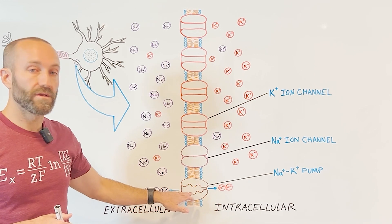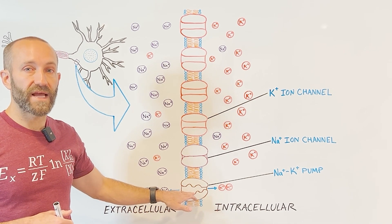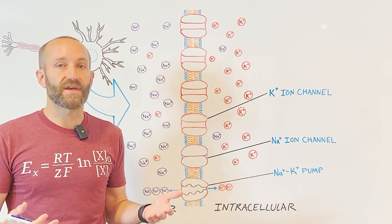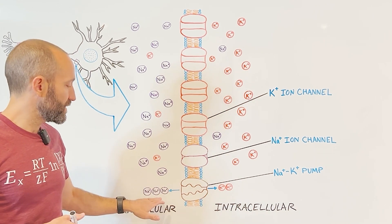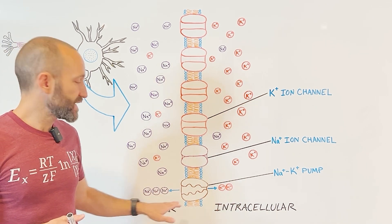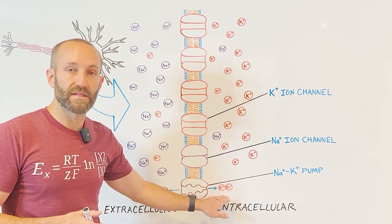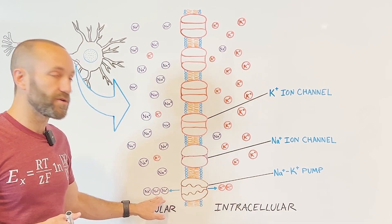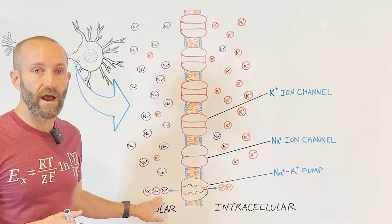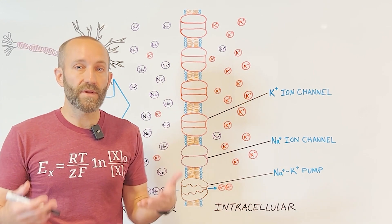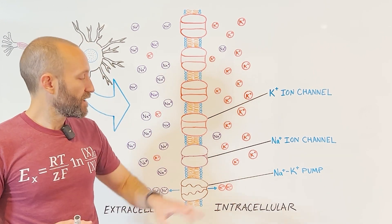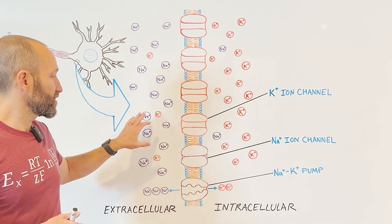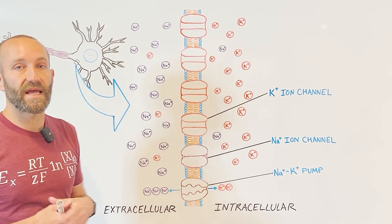The first is a protein called the sodium-potassium pump. The sodium-potassium pump is an enzyme that continuously pumps sodium ions out of the cell, and potassium ions into the cell. It pumps two potassium ions in for every three sodium ions it pumps out. Thus, the pump helps to maintain a higher concentration of potassium ions inside the cell, and a higher concentration of sodium ions outside the cell.